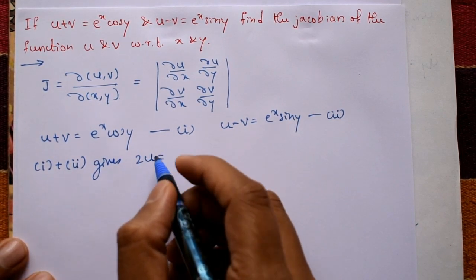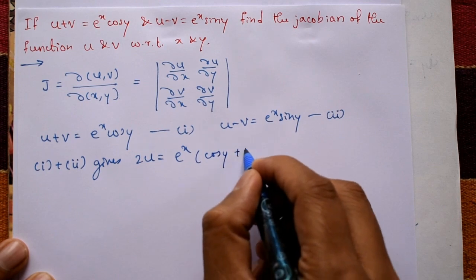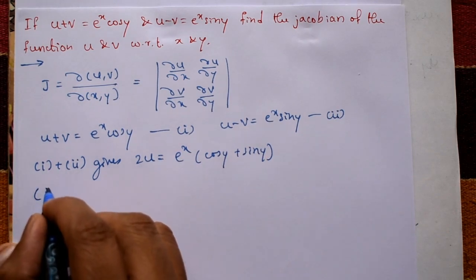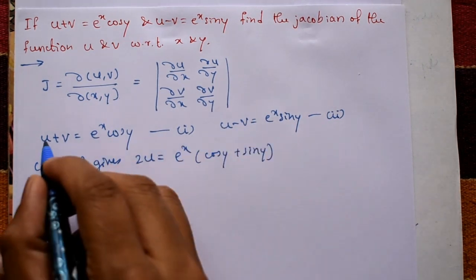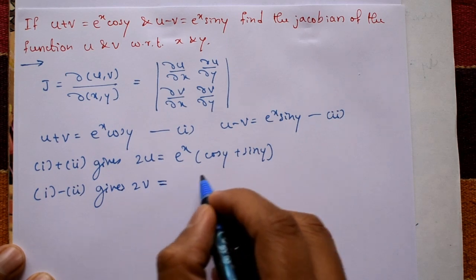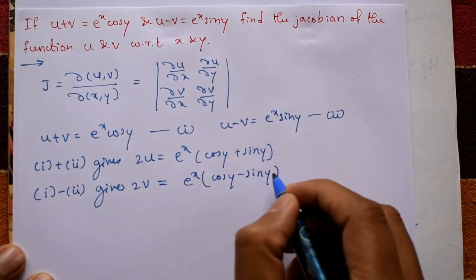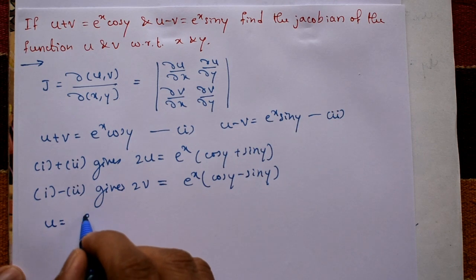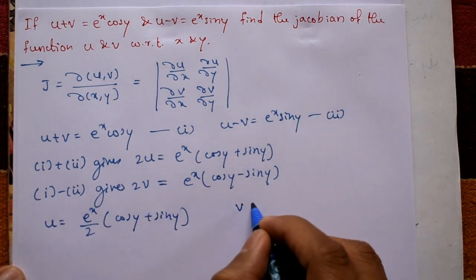Adding the two equations gives 2u equal to e raised to x times (cos y plus sine y). Subtracting equation two from equation one, we get 2v equal to e raised to x times (cos y minus sine y). Therefore, u equals (e raised to x by 2) times (cos y plus sine y), and v equals (e raised to x by 2) times (cos y minus sine y).